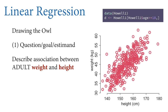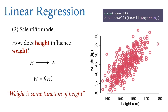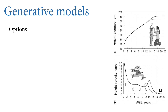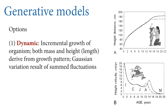We'll restrict ourselves to adult weight and height because they are approximately linearly related. For the scientific model, any association between weight and height arises causally because height causally influences weight—taller people have more person in them and so they weigh more. Here's our DAG: H influences W, meaning weight is some function f of height. There's also an unobserved variable U—a circle indicates it's unobserved—representing other influences on body weight, since height is not the only factor.